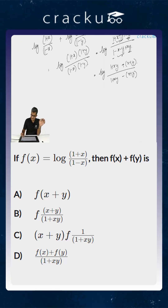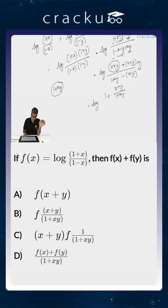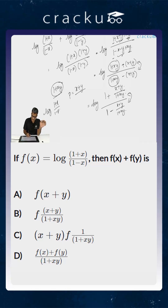So what we will do is divide the numerator and denominator by (1 + xy). This becomes log of 1 plus (x + y)/(1 + xy) divided by 1 minus (x + y)/(1 + xy). This is of the form log of (1 + p)/(1 - p) where p equals (x + y)/(1 + xy).